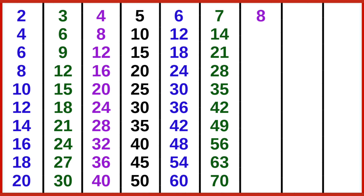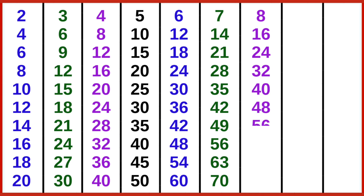8 ones are 8, 8 twos are 16, 8 threes are 24, 8 fours are 32, 8 fives are 40, 8 six are 48, 8 sevens are 56, 8 eights are 64, 8 nines are 72, 8 tens are 80.